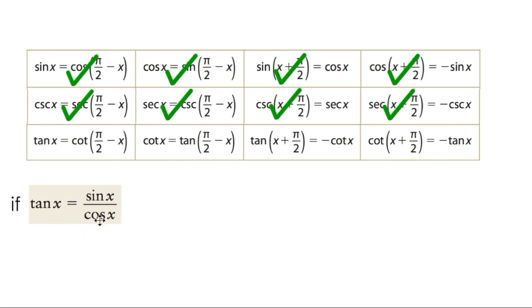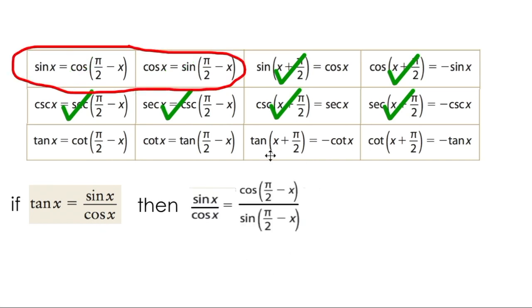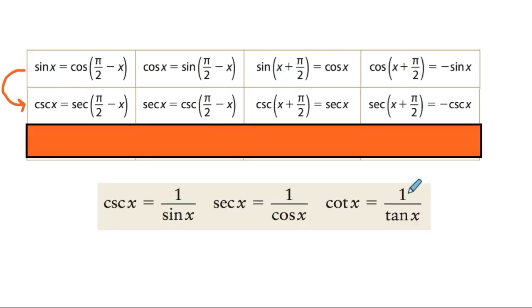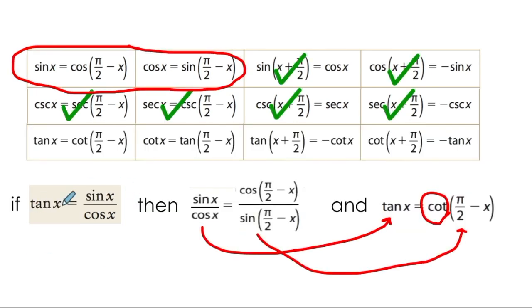So if tan is the ratio of sine over cos, and I know from the first two identities that sine of x is equal to this guy, and cos of x is equal to this guy, then I should be able to say sine over cos, or tan, is equal to cotangent of π/2 minus x. Remember that cotangent is really just 1 over tan, and since tan is sine over cos, and we have cos over sine, we can say that this should be cotangent. Do you see why I love these things?